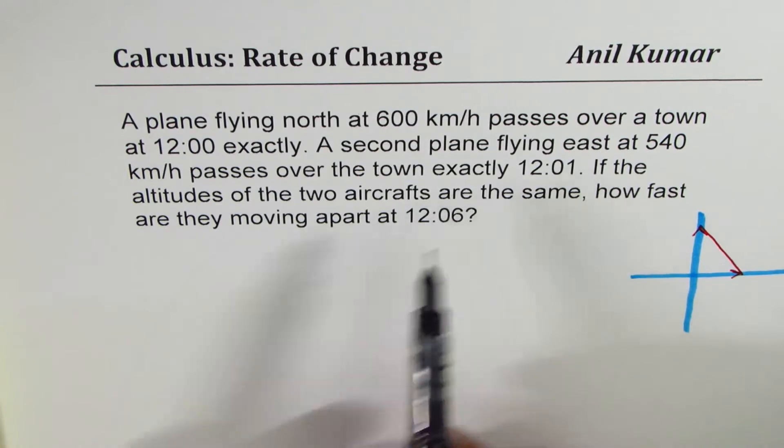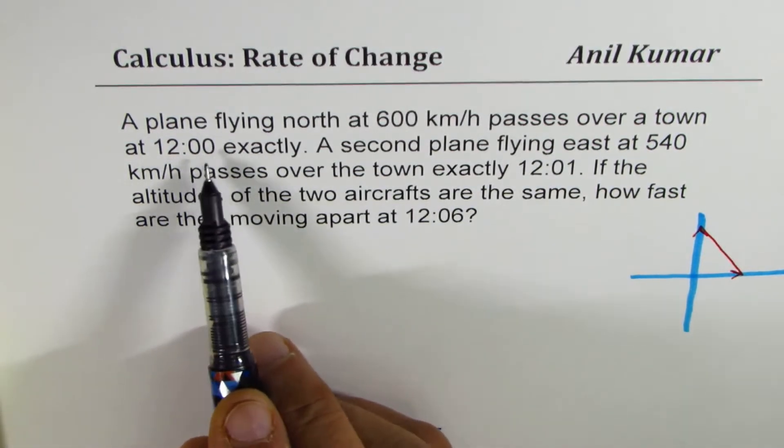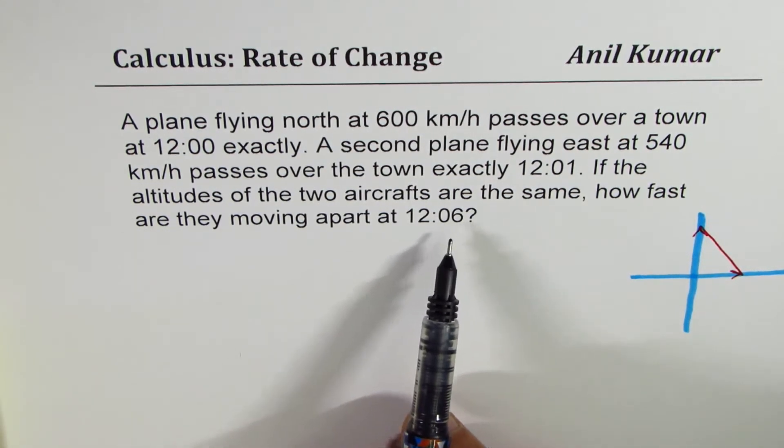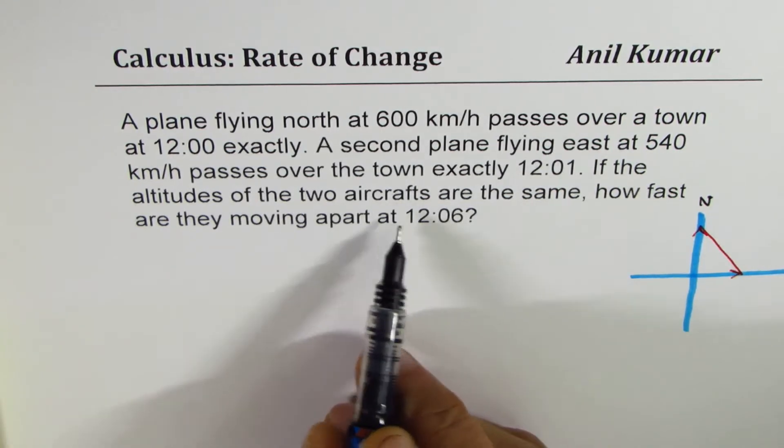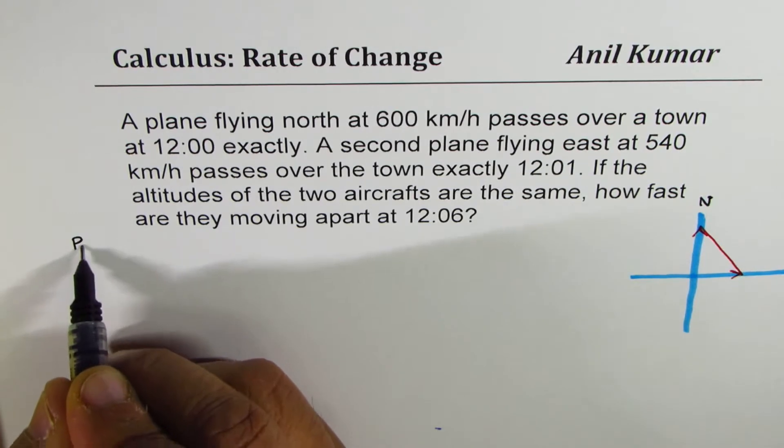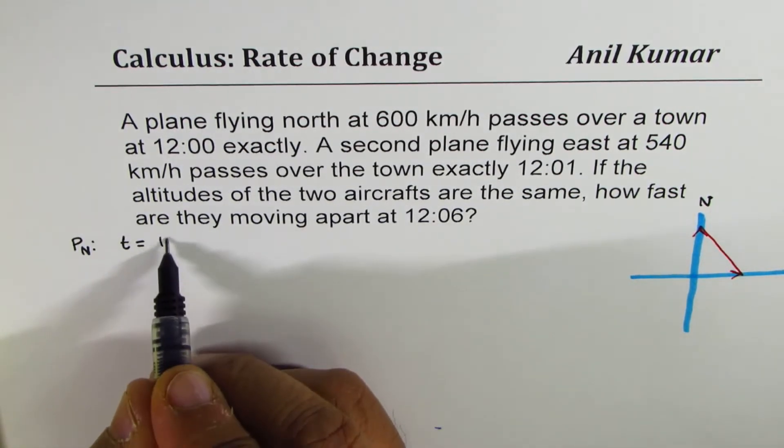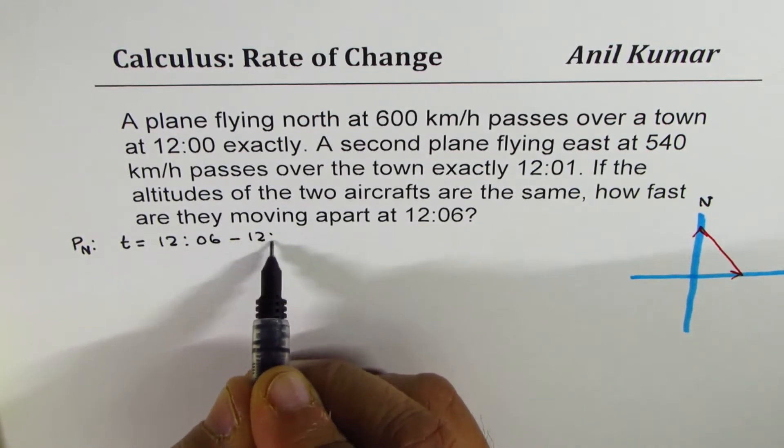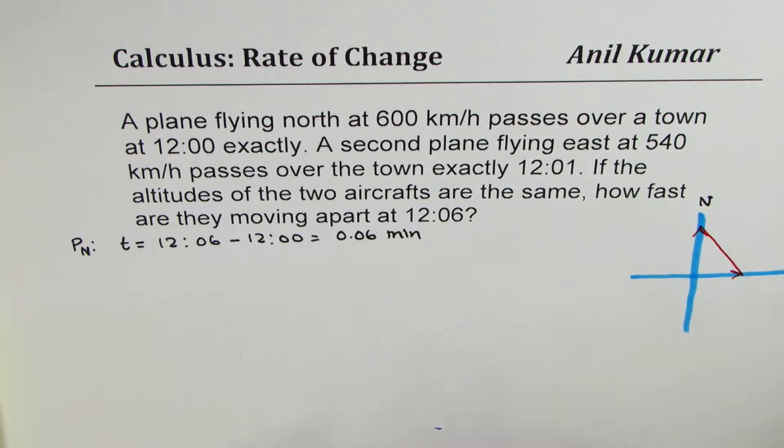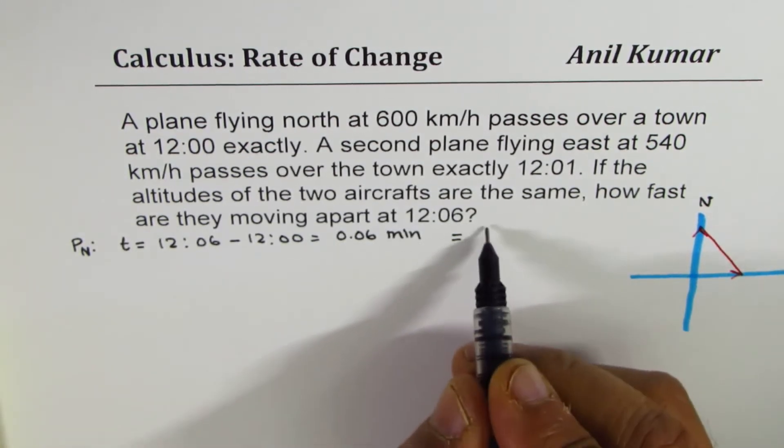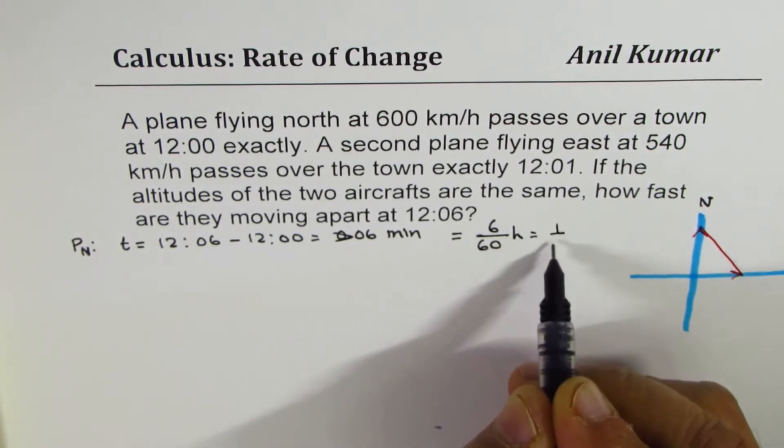Now let's work with the numbers. It says a plane flying north at 600 kilometers per hour passes over a town at 12:00. How fast are they moving at 12:06? So as far as the first plane is concerned which is going towards the north, the time taken will be 6 minutes. So let's say plane going to north as PN. In this case, time which we are going to work with is 12:06 take away 12:00, which is 6 minutes. Now what is 6 minutes? Let's convert everything to hours. So 6 over 60 hours or 1 over 10 hour.